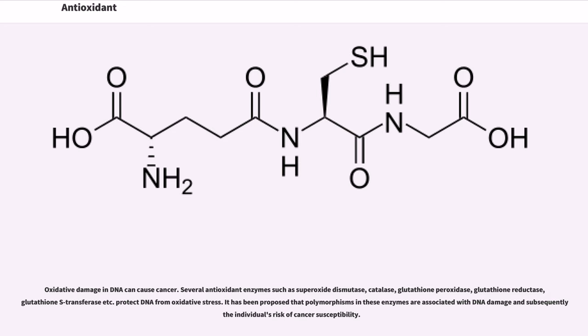Several antioxidant enzymes such as superoxide dismutase, catalase, glutathione peroxidase, glutathione reductase, glutathione S-transferase etc. protect DNA from oxidative stress. It has been proposed that polymorphisms in these enzymes are associated with DNA damage and subsequent individuals' risk of cancer susceptibility.